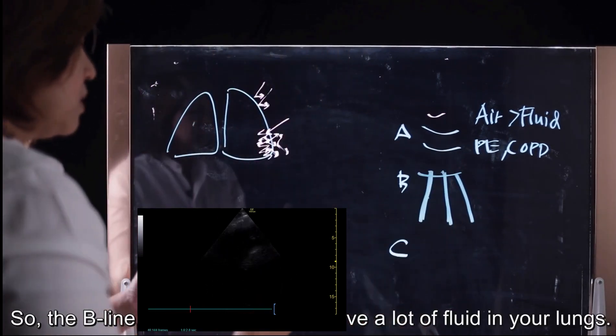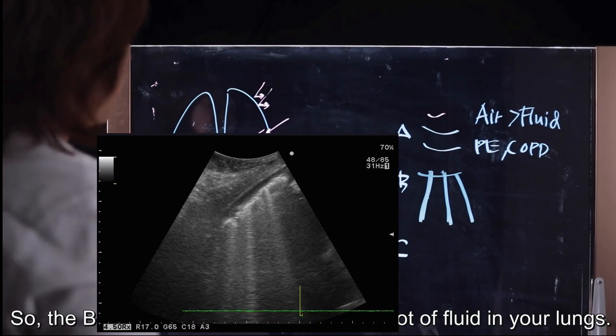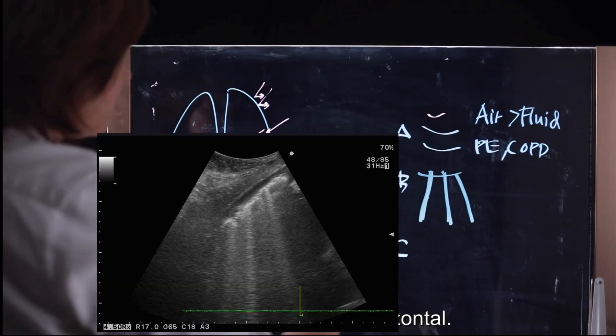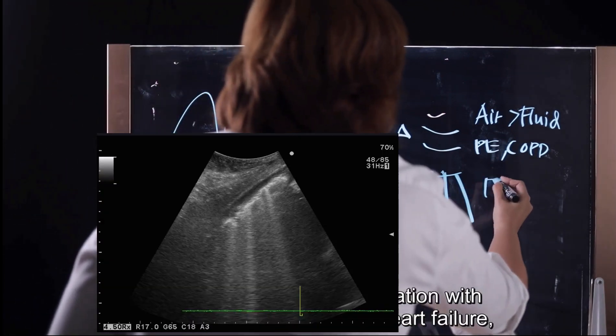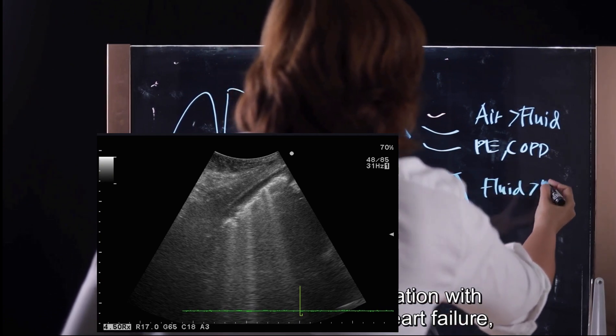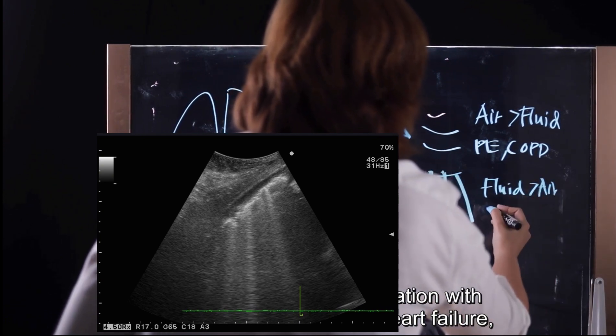So B-line happens when you have a lot of fluid in lung, and it's vertical, it's not horizontal.